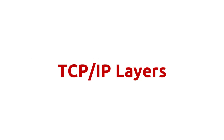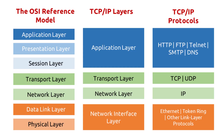TCP/IP layers: the TCP/IP layers match the OSI model. The network interface layer corresponds to the physical and data link layers. Both the network and transport layers match directly. And the TCP/IP application layer corresponds to the upper three layers of the OSI model.